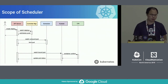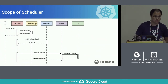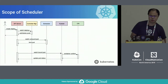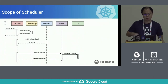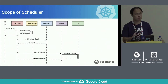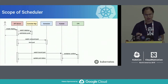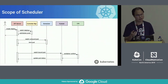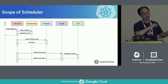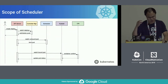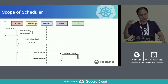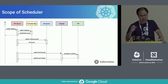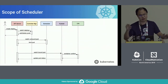After that, the controller manager and many other components watch the API objects they are interested in. For example, the controller manager is interested in the deployment replica set. It gets an event that a new deployment is created but doesn't have any associated replica set, so it creates one. Once the replica set is created, the replica set controller notices the desired state — for example, replica set number equals three — but there are no pods yet.